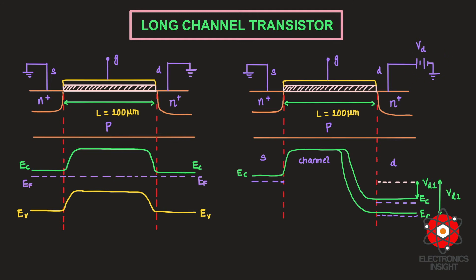Now let us apply a non-zero potential only at the drain side, assuming the gate-to-source potential is sufficient for the transistor to be in the on state — meaning the gate voltage is slightly greater than the threshold voltage. As we start increasing the potential at the drain side, the conduction band of the source and drain are separated by the applied voltage, and the conduction band at the drain side starts to decrease.